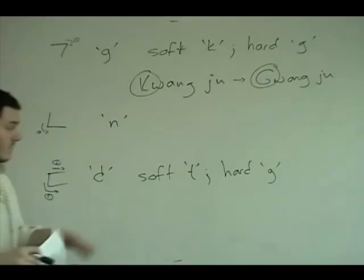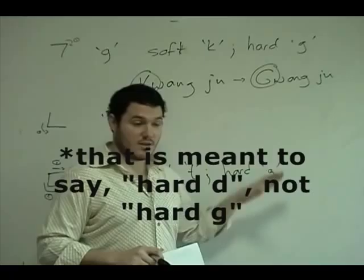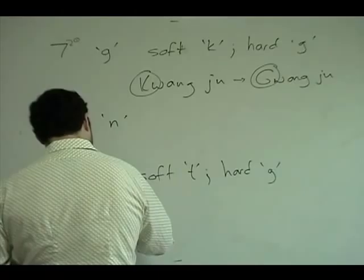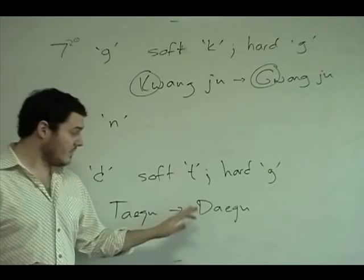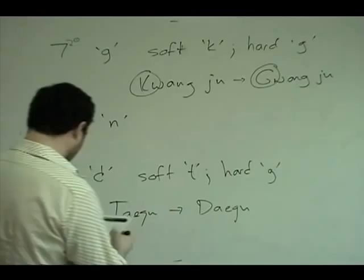So, it will have, it will occasionally be a soft T and a hard D. It will be in that middle ground. And the city that represents the example for this is Daegu. The city Daegu used to be spelled with a T and then around the same time, they changed it to a D. Just showing that it's kind of in that middle ground.